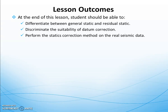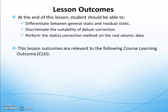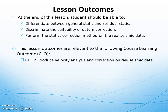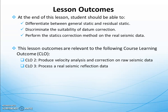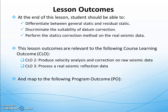The second lesson outcome is that you should be able to discriminate the suitability of datum correction — what is datum, and how do we apply the datum to correct the static. The third lesson outcome is that you should be able to perform the static correction method on real seismic data. This maps to course learning outcome number two: producing velocity analysis and correction on raw seismic data, where the correction mentioned is the static correction.